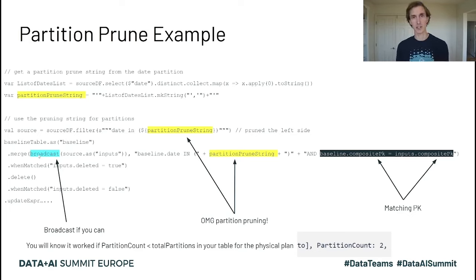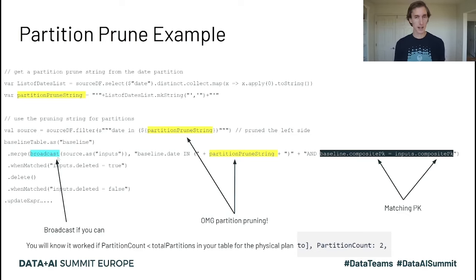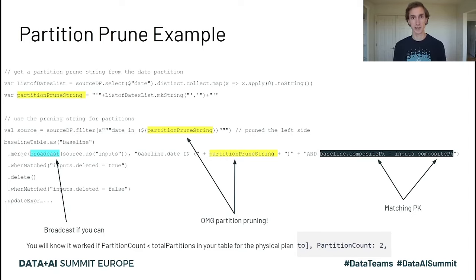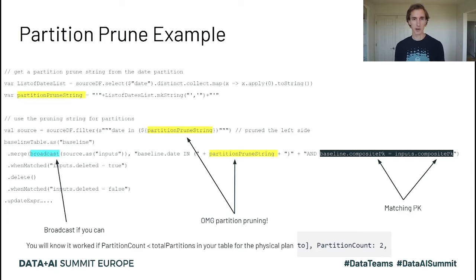To know if things are actually being pruned, go to the physical plan and look for something called 'partition count' at the bottom. If I have 100 partitions in this table and my partition count is less than 100, that means I'm successfully partition pruning. If partition count is less than total partitions, congratulations — you're partition pruning.